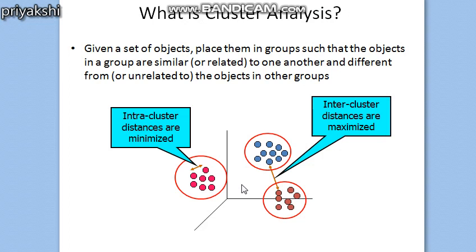We human beings are skilled at dividing objects into groups or clusters. For example, even relatively younger children can quickly label the objects in a photograph as building, vehicle, animals or plants. So in the context of understanding the data, clusters are potential classes and cluster analysis is the study of techniques for automatically finding the classes.